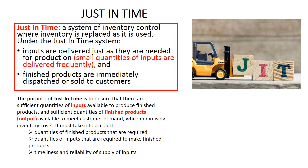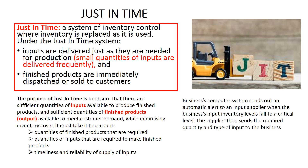When deciding what quantity of inputs is needed for immediate production, the business must consider three factors: the quantities of finished products required; the quantities of inputs needed to make those finished products; and the timeliness and reliability of supply of inputs. Many businesses have a computerized just-in-time process where their computer system sends an automatic alert to a supplier when input inventory falls to a critical level. We saw this with Toyota — just before it was time to install seats, the system sent an alert to the seat supplier, and those seats were delivered and immediately installed on the production line.